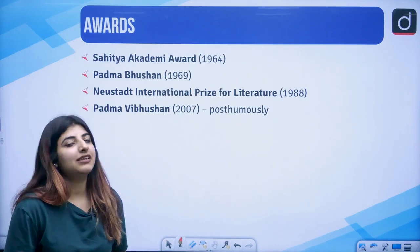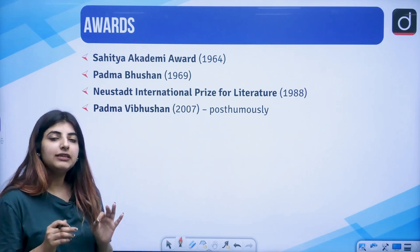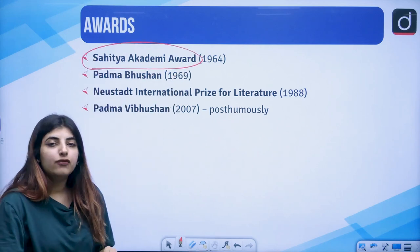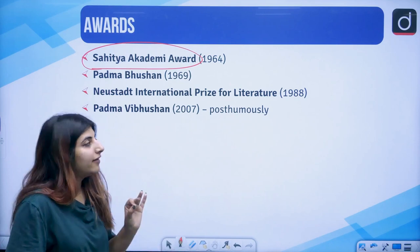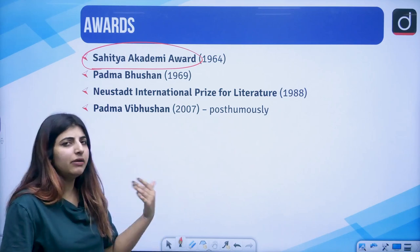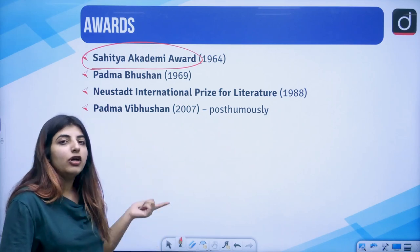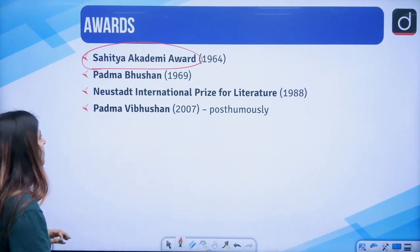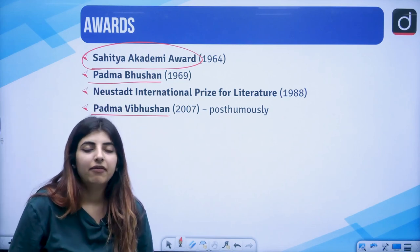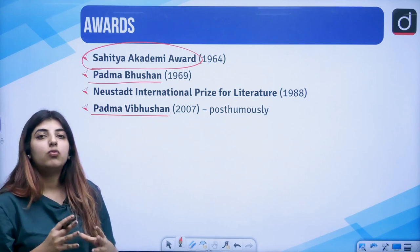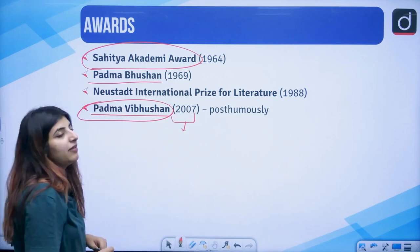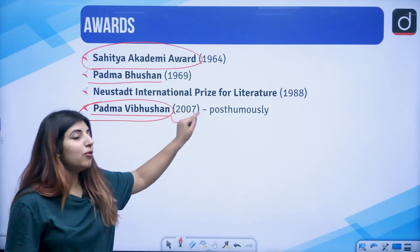Certain facts here: he won certain awards. The first award of note is the Sahitya Akademi Award, which he won for The Serpent and the Rope. The novel was published in the year 1960, and he later won the award for it in 1964. Padma Vibhushan and Padma Bhushan — two gallantry awards when we talk about Indians — were also awarded to him. The Padma Bhushan was presented to him in the year 2007 and it was given posthumously.